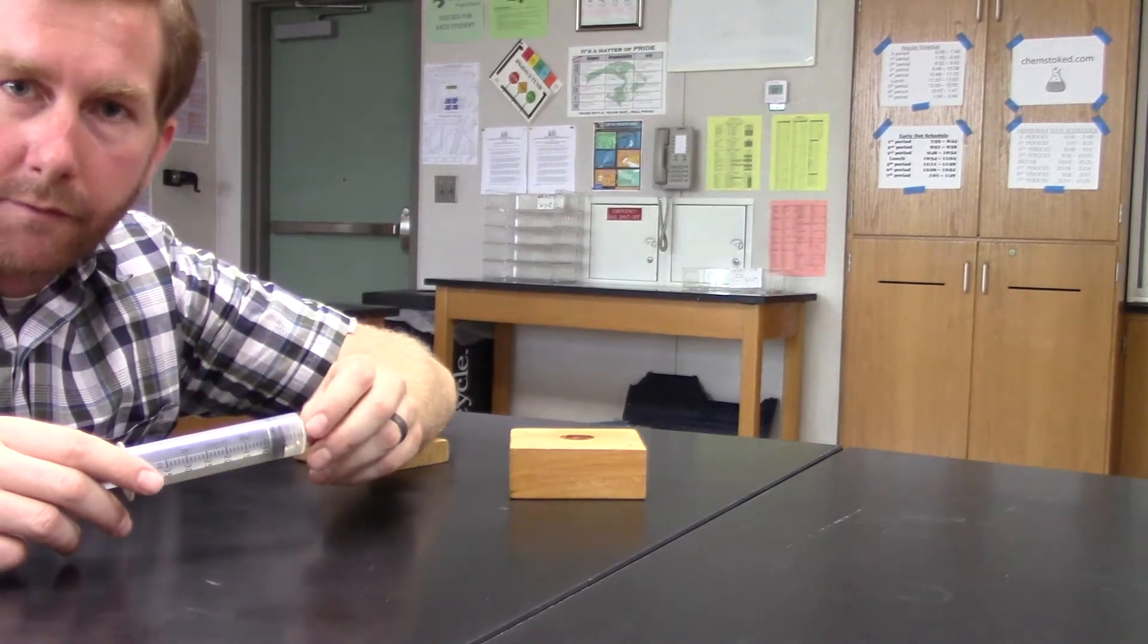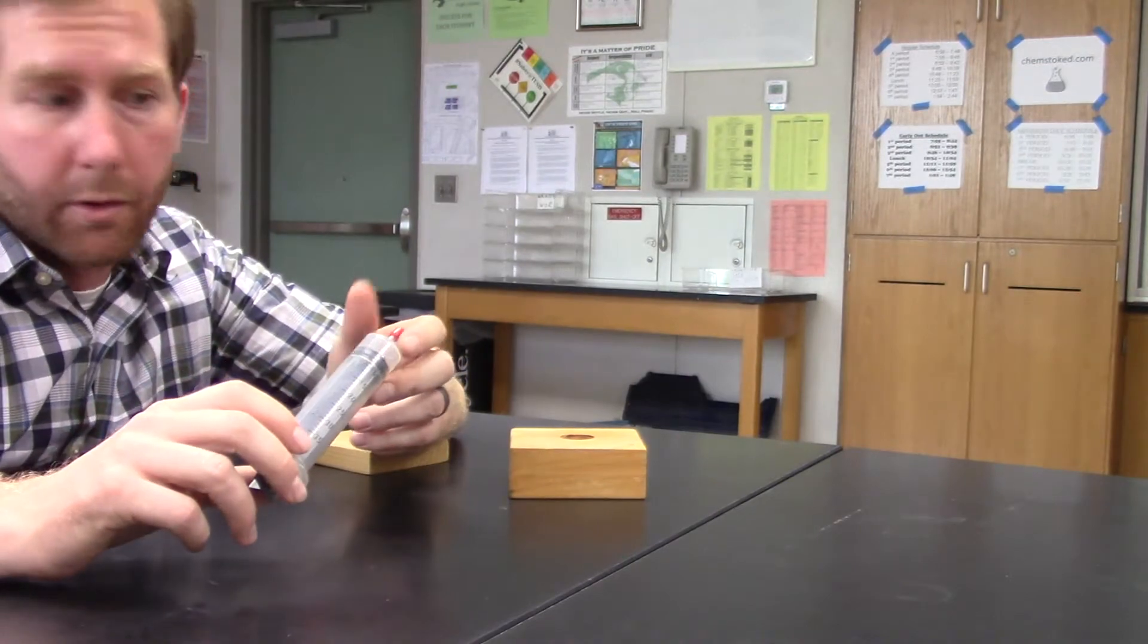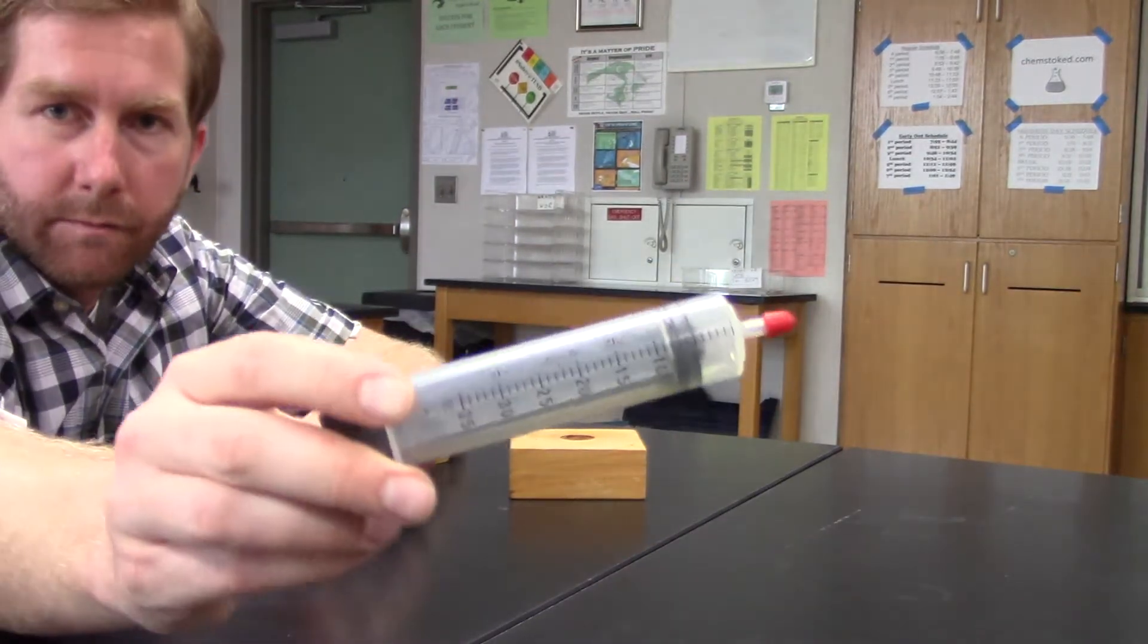Now we're going to measure the pressure and volume relationship with an improvised unit that we're going to call books. So I have this small syringe.